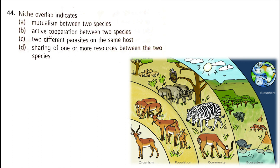And the last question: niche overlap indicates — A. mutualism between two species, B. active cooperation between two species, C. two different parasites on the same host, D. sharing of one or more resources between the two species. The correct answer is option D. Ecological niche means the total interaction of a species with its environment, or its functional position in an ecosystem. Ecological niche depends on the species' structural adaptations, physical responses, and behavior. Niche overlap means that one or more resources are shared between two species.